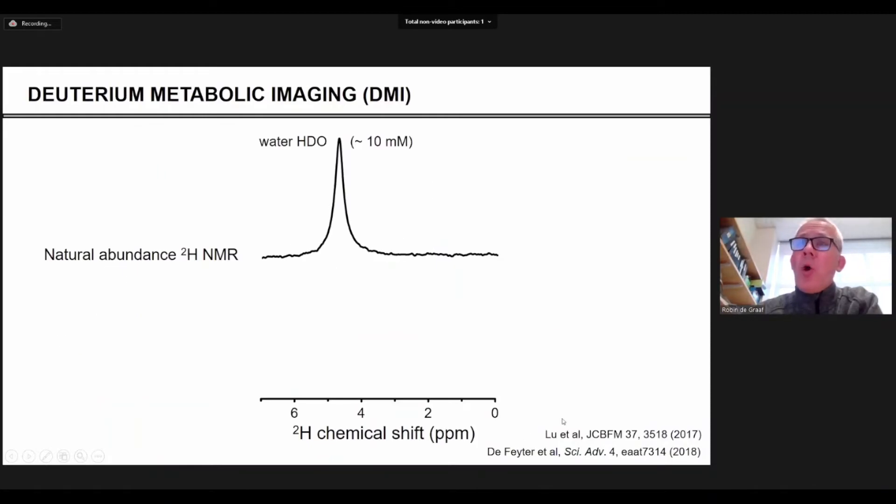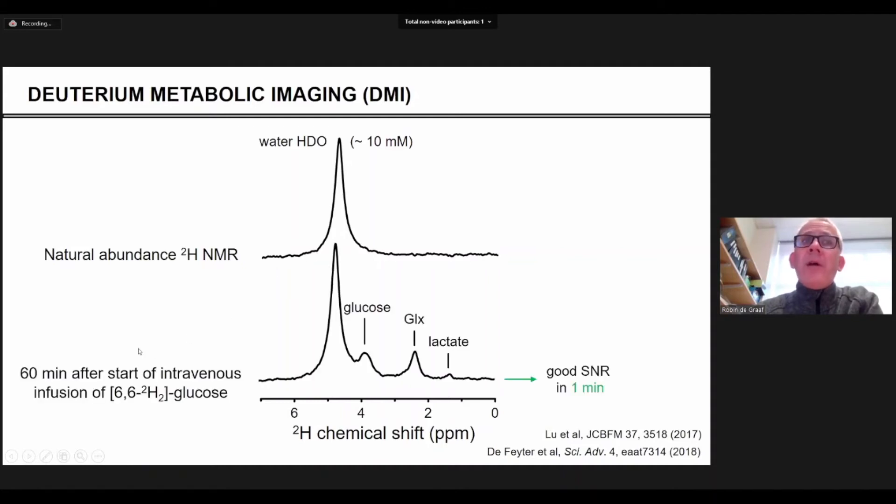Recently at Yale, but also the group in Minnesota, have shown that deuterium NMR is a very viable and sensitive alternative to carbon-13 NMR. If you get a deuterium NMR spectrum from brain, you typically just get your natural abundant water signal. If you now give the subject deuterated glucose, then you see after some time that the metabolic products glutamate and lactate are being formed, very similar to the carbon-13 experiment. But the difference is that this experiment, this spectrum was acquired in only one minute. So it is really good signal-to-noise and that then really opens up the possibility to acquire images.